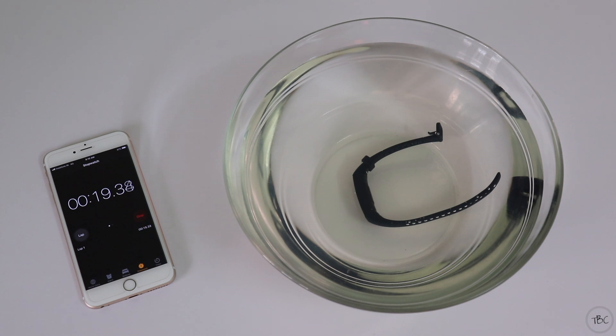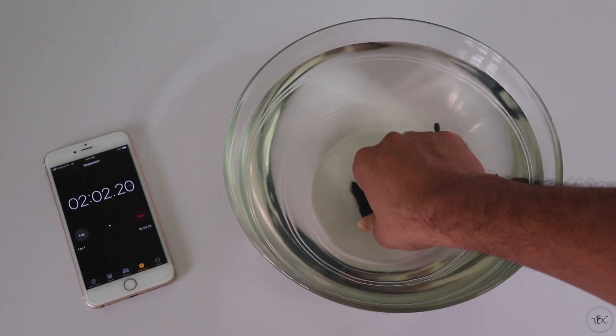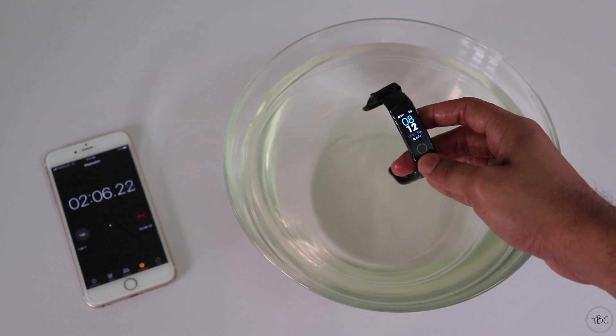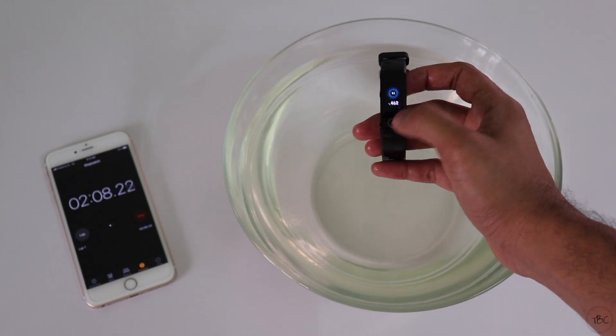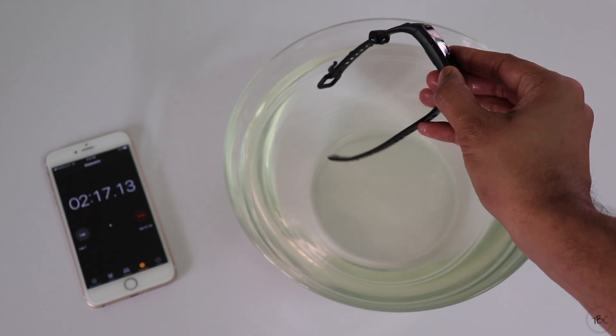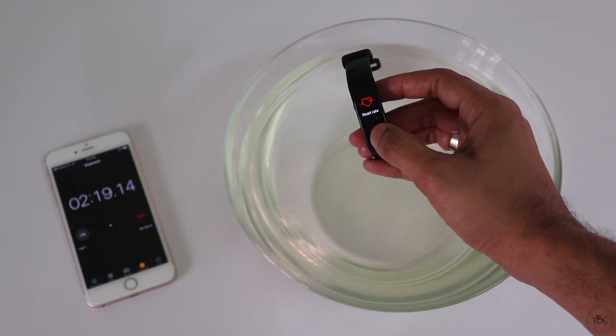With this rating you can use it in rain and occasional splash, but Honor claims you can even take it for swimming. Now I'm gonna fast forward the time to two minutes. When we take it out of water, as you can see the screen is working and the touch is also responding. Everything seems good, there isn't any sign of water inside and even the touch sensitive ring is working.